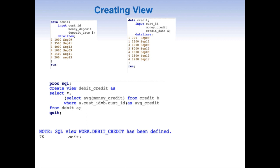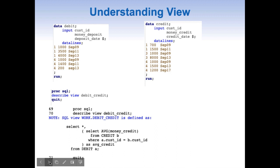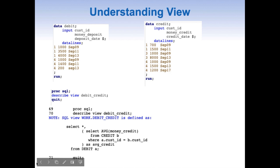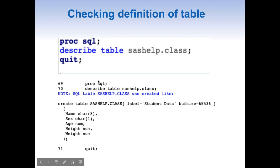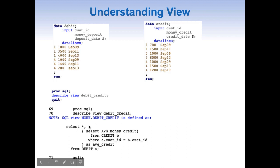Let's understand the view a little more with DESCRIBE VIEW. When we write DESCRIBE VIEW, we get the following in the log: the definition of the view, which is nothing more than the code stored by writing CREATE VIEW. If you look at a table definition, it has variables and their definitions. But when you look at a view definition, it is all about the code only.